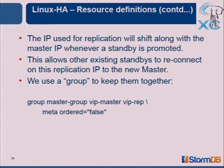We want the replication IP to shift to the new master whenever a new master is chosen — so that the remaining hot standby can reconnect to the replication IP and restart its replication. In Pacemaker you can specify this by using a group. You say group VIP master and VIP replication together, so that when you specify a group, it fails over together.